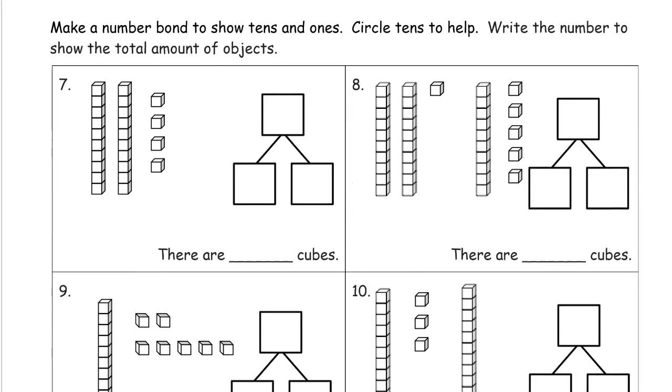Make a number bond to show tens and ones. Circle tens to help. Write the number to show the total amount of objects. That's what we're doing on the end of the first page. So here we have two ten groups. That's twenty.